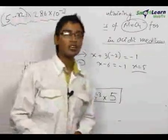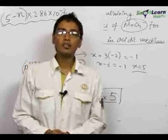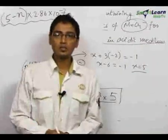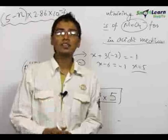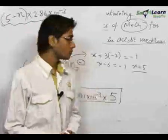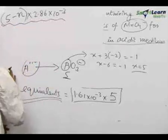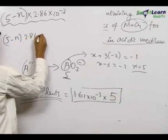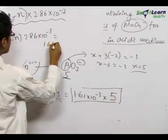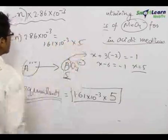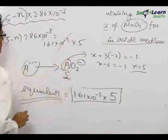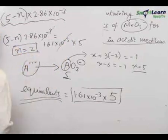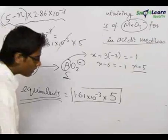Here, Aⁿ⁺ is getting oxidized to A⁺⁵, and MnO₄⁻ is getting reduced to Mn²⁺. So, KMnO₄ is getting reduced and hence it is the oxidizing agent, and Aⁿ⁺ is getting oxidized so it is the reducing agent. Hence, we equate the equivalents of the reducing agent and the oxidizing agent: (5 − N) × 2.86 × 10⁻³ = 1.61 × 10⁻³ × 5. The 10⁻³ terms cancel, and on solving, we get N = 2.